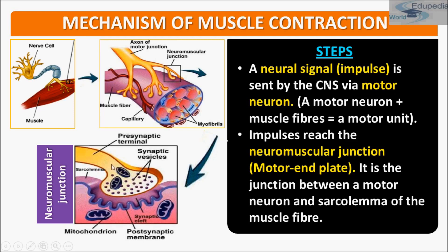These are the axons of the neuron. The bulb part is the axon terminal of the neuron. This is the muscle membrane, and this is known as the presynaptic terminal. The space between the axon terminal and the muscle junction is known as the synapse, also called synaptic cleft. This is the presynaptic terminal, this is the synaptic membrane, and this is the postsynaptic membrane — and remember that this postsynaptic membrane is the sarcolemma, the muscle plasma membrane.